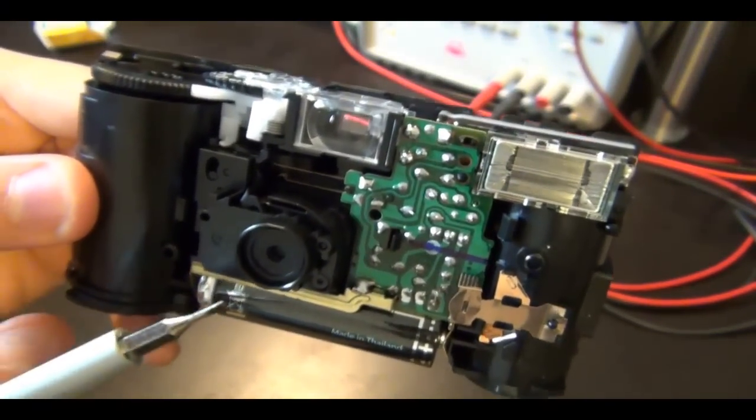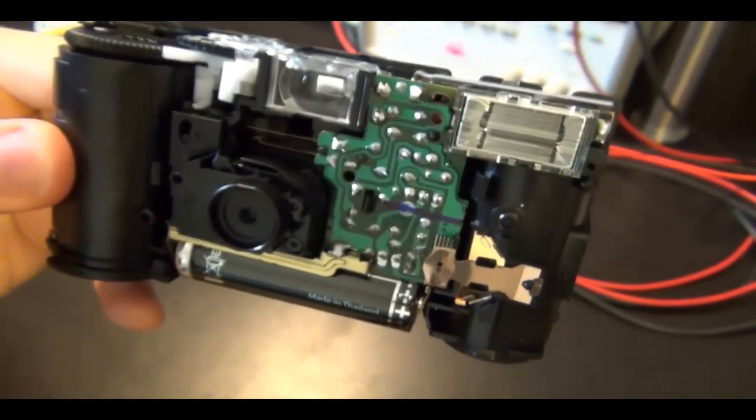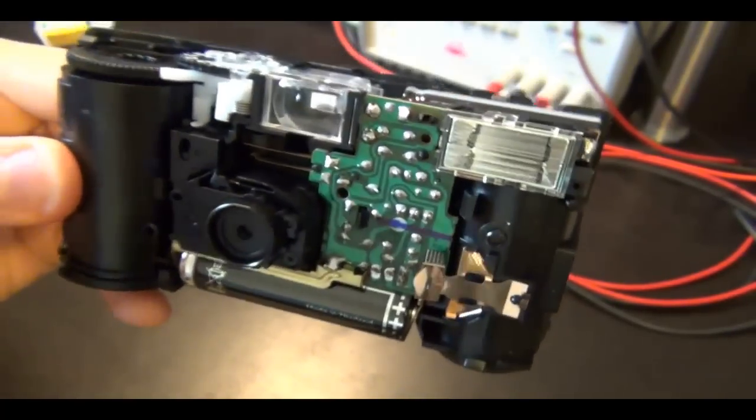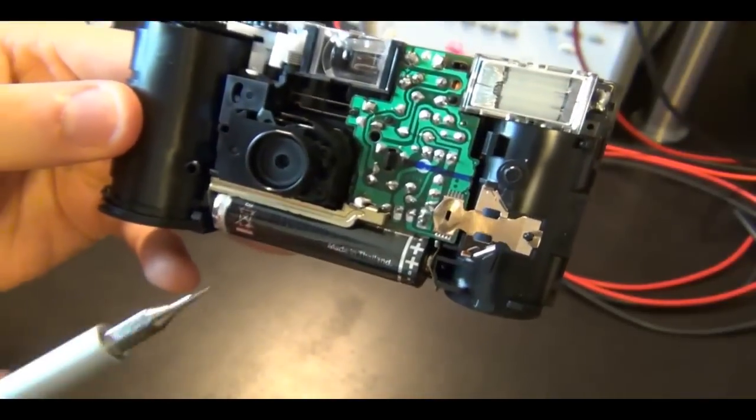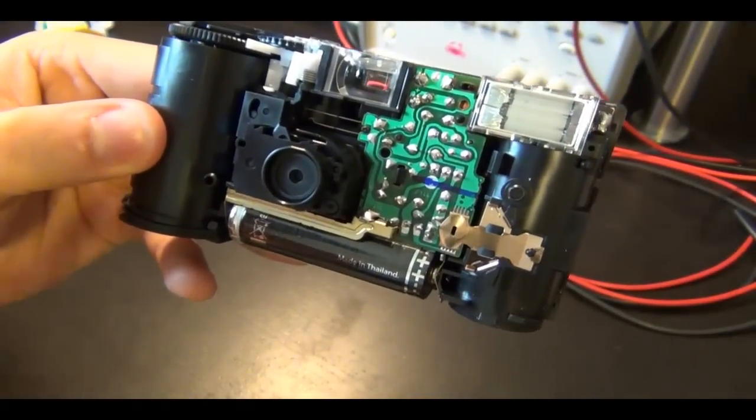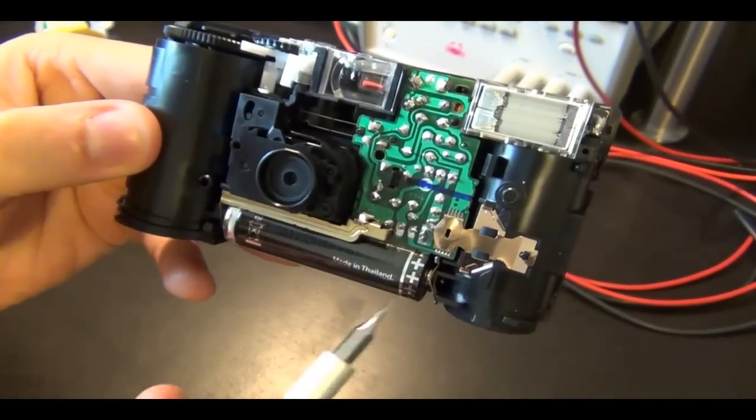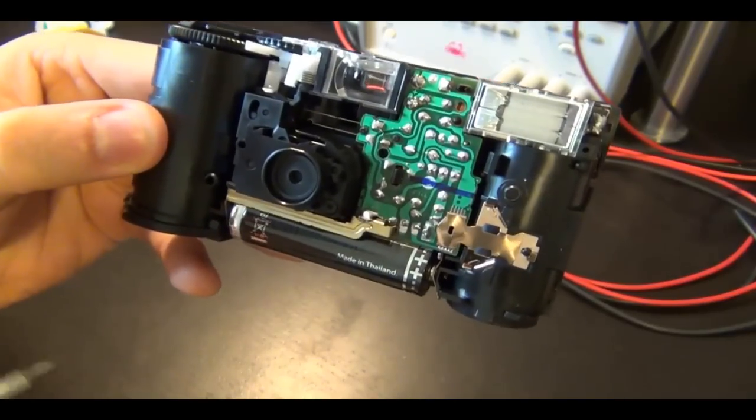So even though the flash went off, the capacitor is not fully discharged. So there is enough charge in there to give you a shock. So you have to be very careful. So I'm going to discharge the capacitor first using a metallic piece. Take the battery out and then take the flash circuit out.